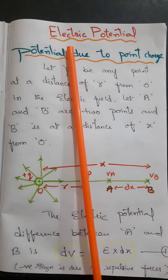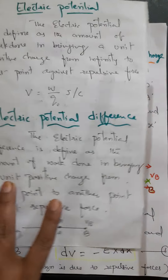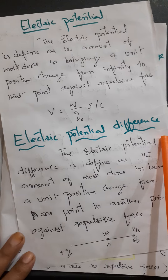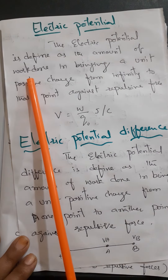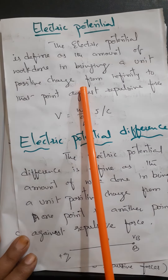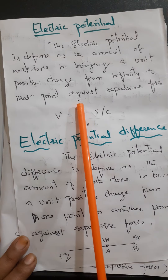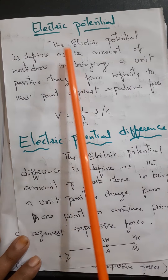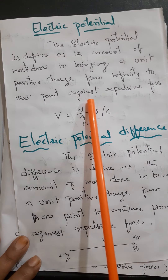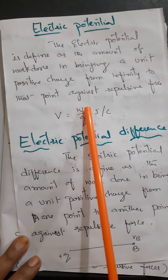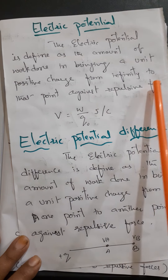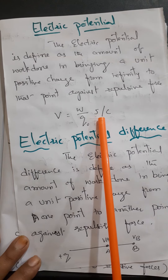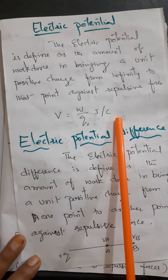Before going to talk about this topic, first of all we should know what is electric potential and electric potential difference. Electric potential means the amount of work done in bringing a unit positive charge from infinity to that point, or against the repulsive forces. It is the amount of work done in bringing a unit positive charge from infinity to a certain point. This can be measured in joules per coulomb.